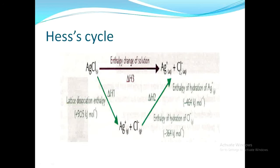In the first process, silver chloride is dissolved in water to form silver positive ions and chloride negative ions. The process of dissolving one mole of silver chloride in water is known as dissolution, and the enthalpy change that takes place in this process is known as enthalpy of solution.